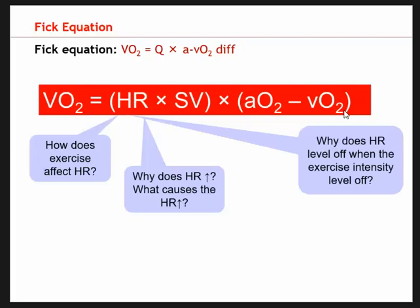The first question: how does exercise affect heart rate? This one's pretty obvious — heart rate increases with exercise. There's a linear relationship between exercise intensity and heart rate. The harder we exercise — the faster we run, the more reps we do, the heavier we lift — the higher our heart rate will be, up until we reach maximum heart rate.